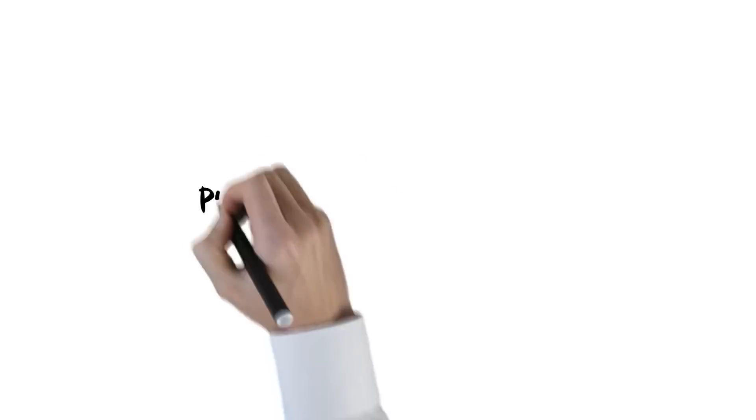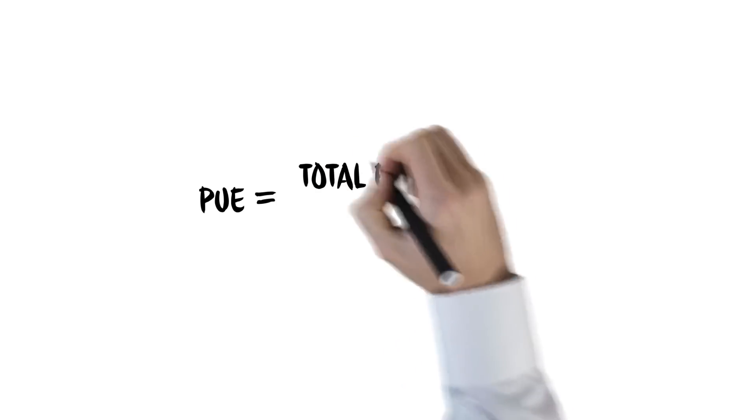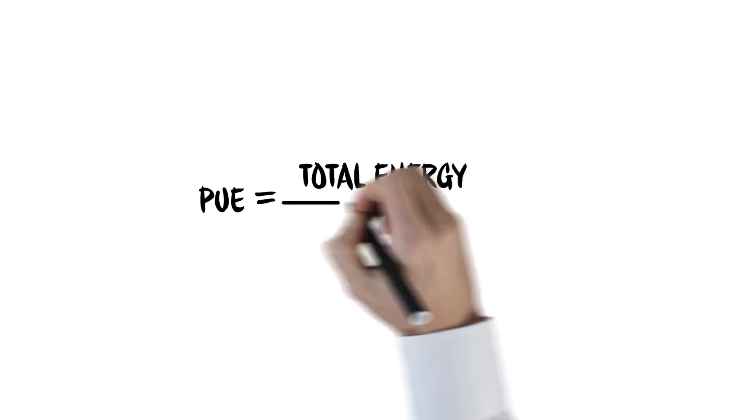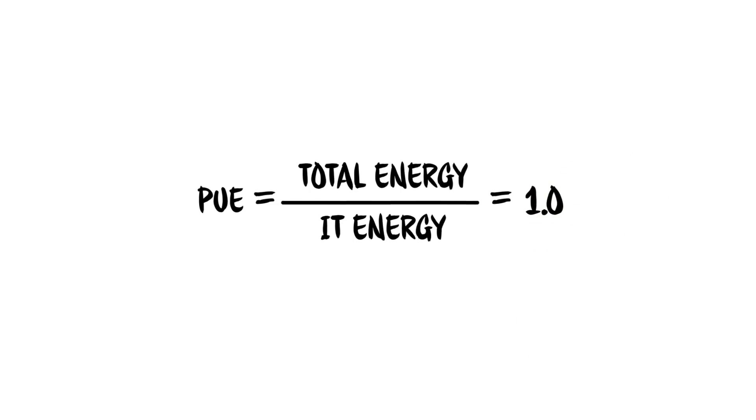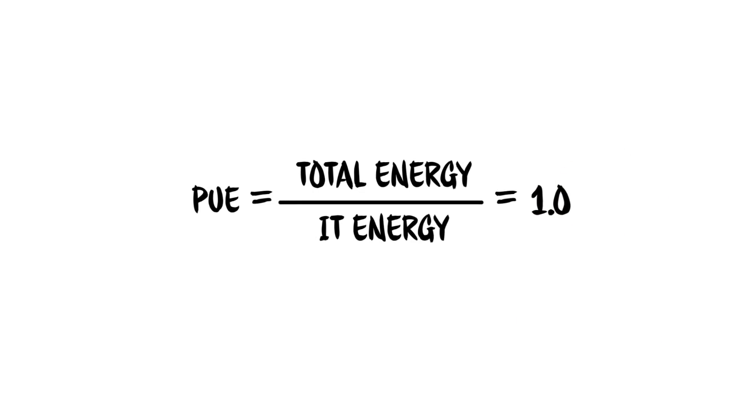It's all about PUE – Power Usage Effectiveness. The goal is to achieve a PUE of 1.0. In other words, to build a data center where 100% of the energy used goes towards powering the servers themselves.